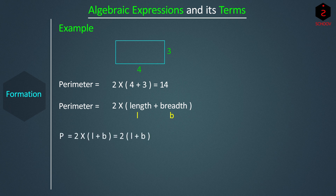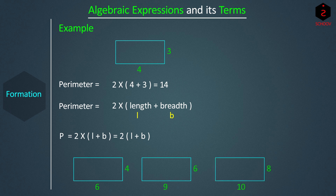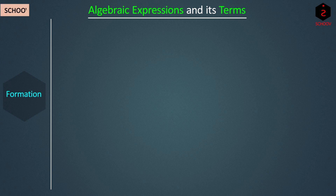For different rectangles, L and B will be different — for example, 6 and 4, or 9 and 6, or 10 and 8. There can be many different values of L and B, and we cannot write all such values. Hence, we use letters L and B to represent changing values of length and breadth. And this is precisely why we use letters in maths — we use letters to represent numbers.